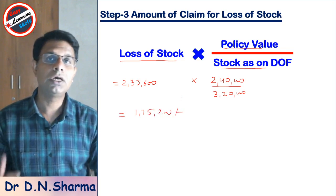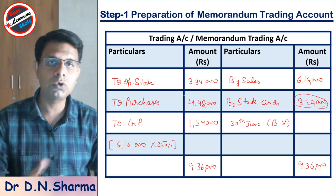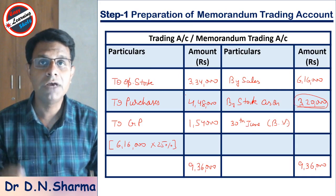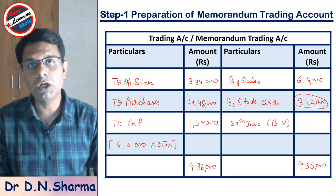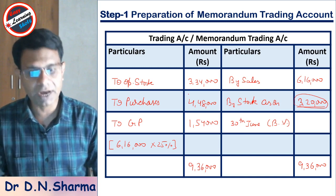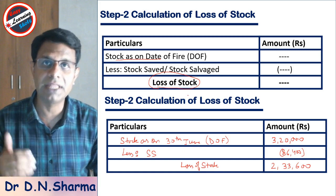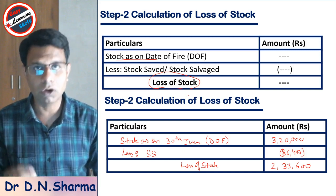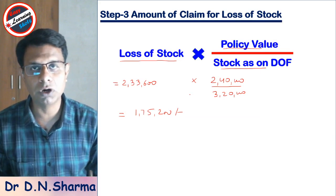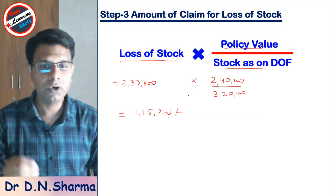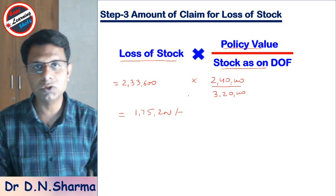In summary, when the gross profit rate is given, first prepare the memorandum trading account to find the value of stock present at the date of fire. Then deduct the stock saved to get the loss of stock, and finally apply the claim formula to calculate the amount of claim for loss of stock. Friends, if you like this video please share it and subscribe to the channel. Thank you so much, have a nice day.